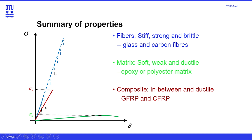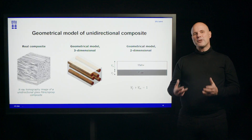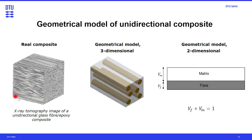Now I will look at a simplified representation of our UD composite. We have an x-ray tomography picture of a fiber matrix system — a unidirectional composite. We can represent that with a few bars in a certain direction, and in a two-dimensional way it can be represented by a matrix phase and a fiber phase with a certain volume fraction each. The sum of the volume fraction of fiber plus volume fraction of matrix equals 1 for the total material.